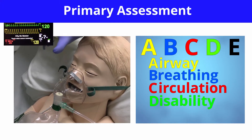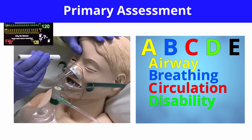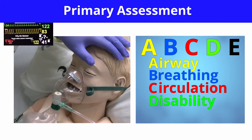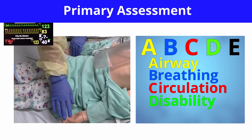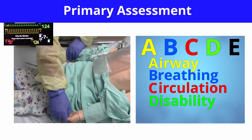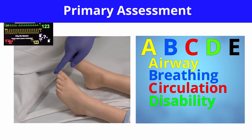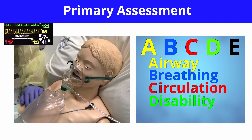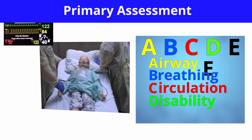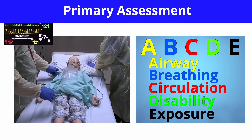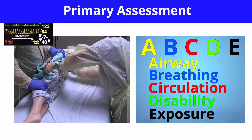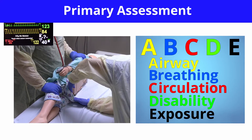Disability: the child is alert but appears anxious. He is speaking in two to three word sentences. Pupils are equal and reactive to light. Glucose has been deferred at this time to minimize agitation. Exposure: he is afebrile at 37.5 degrees Celsius. There are no signs of trauma, no visible rashes or petechiae. His weight is 35 kilos.